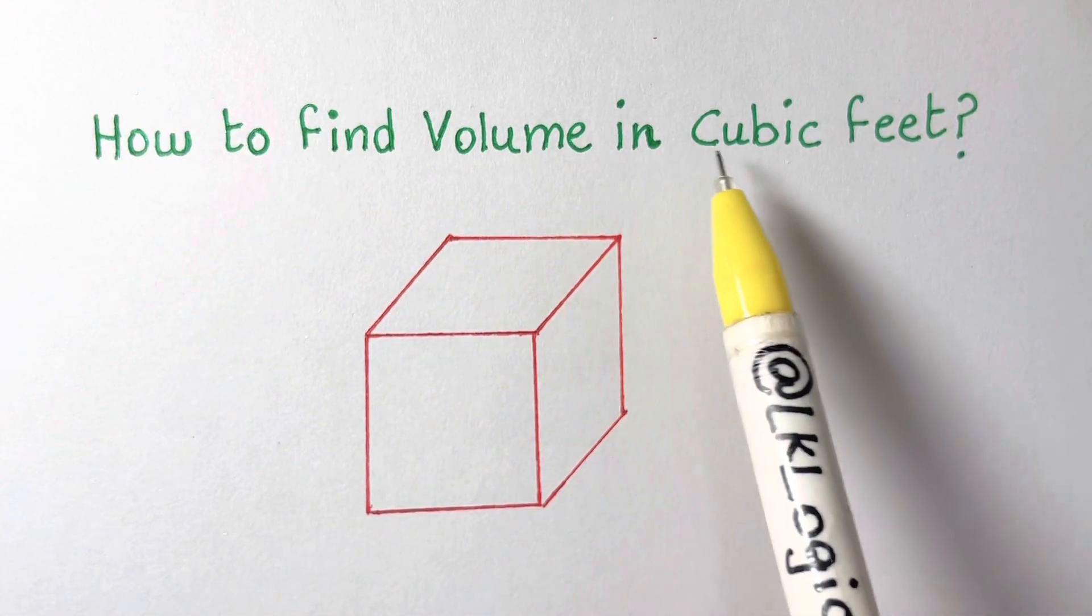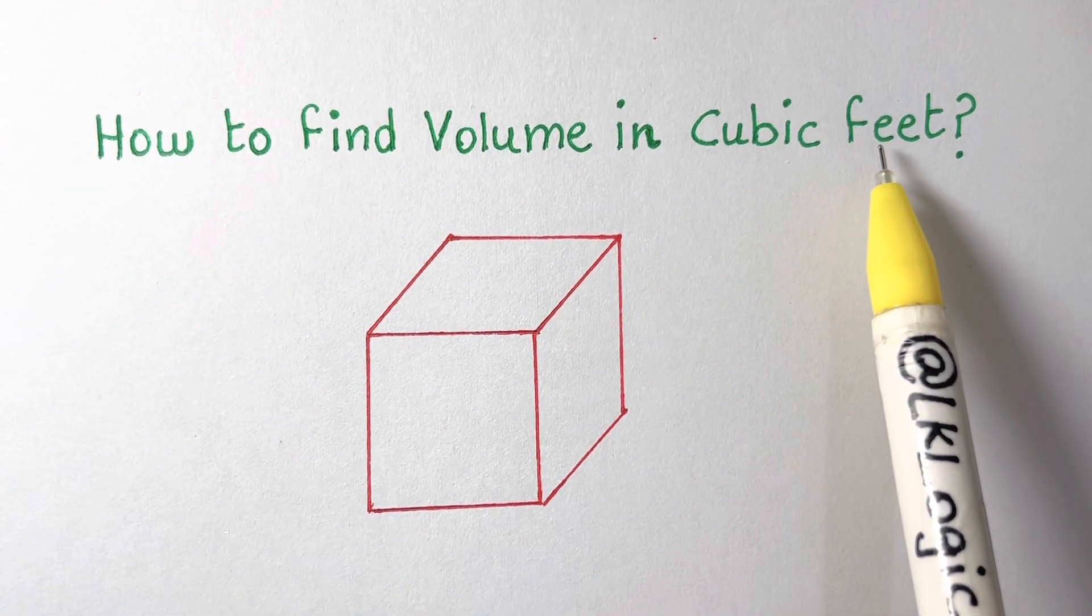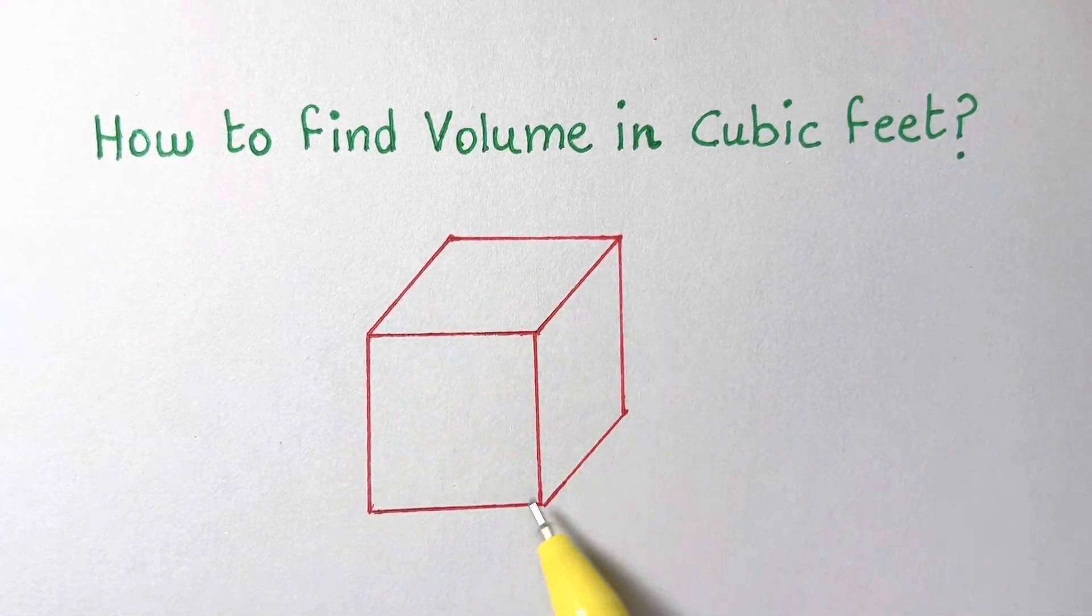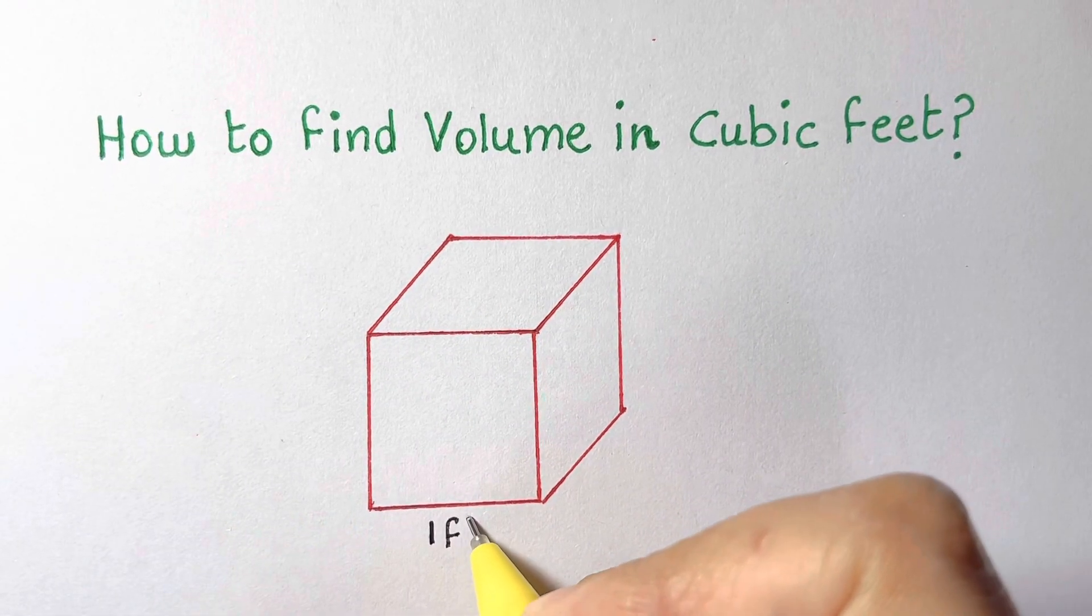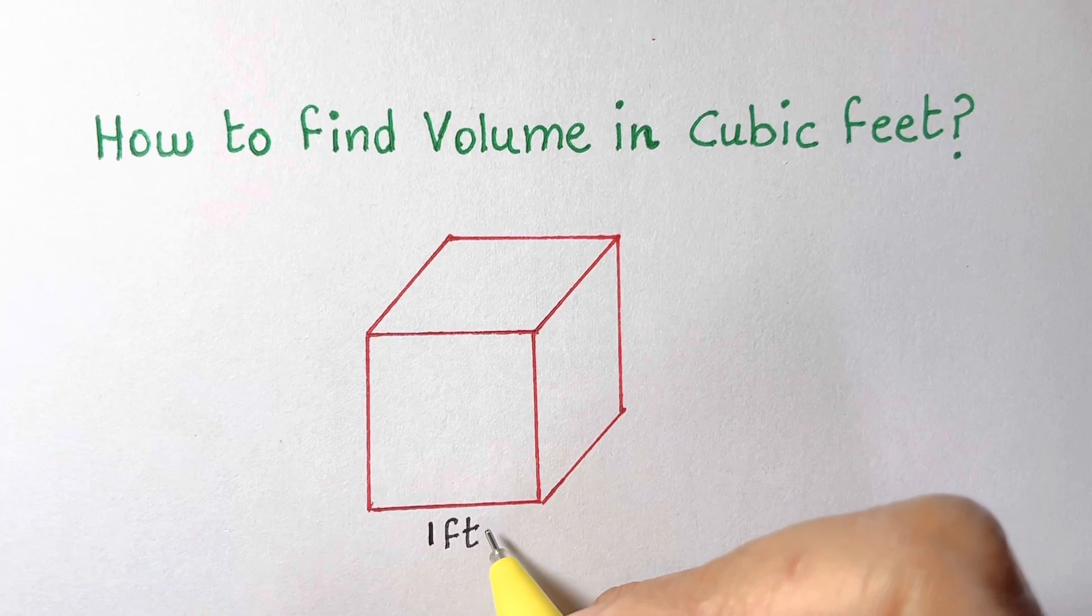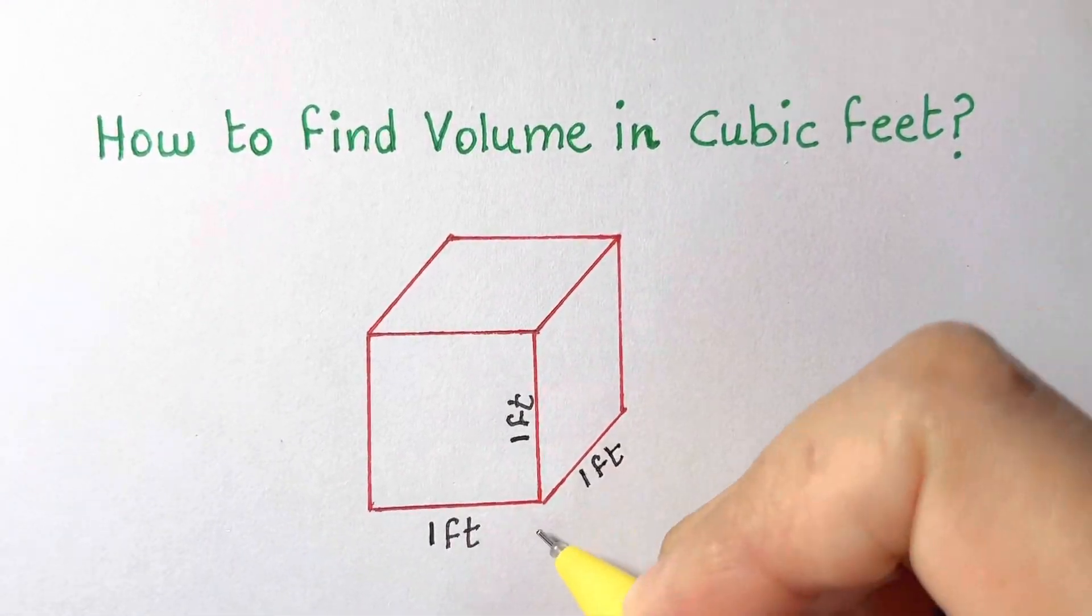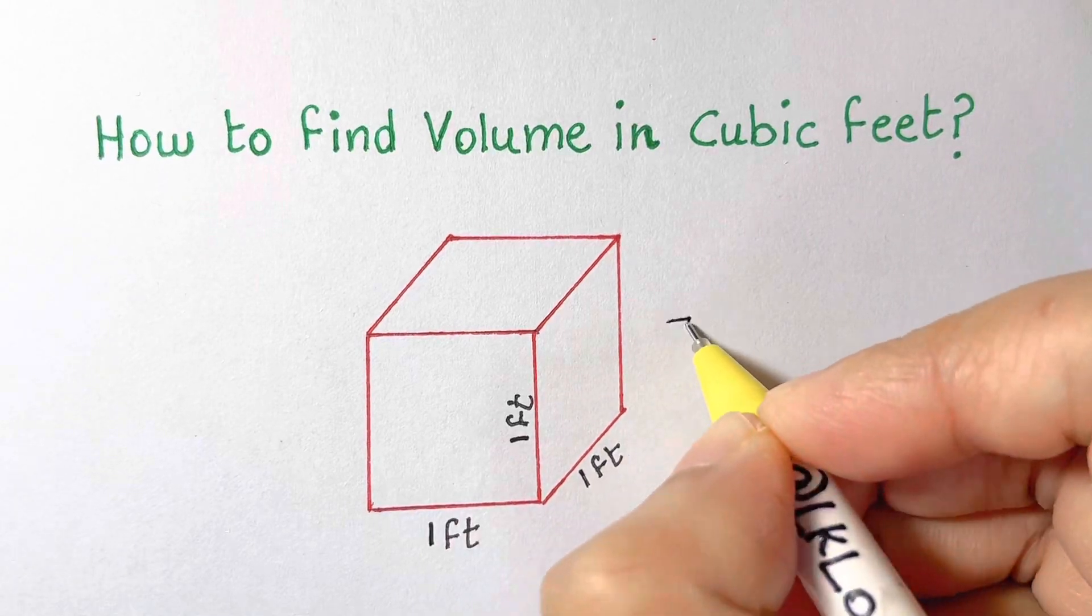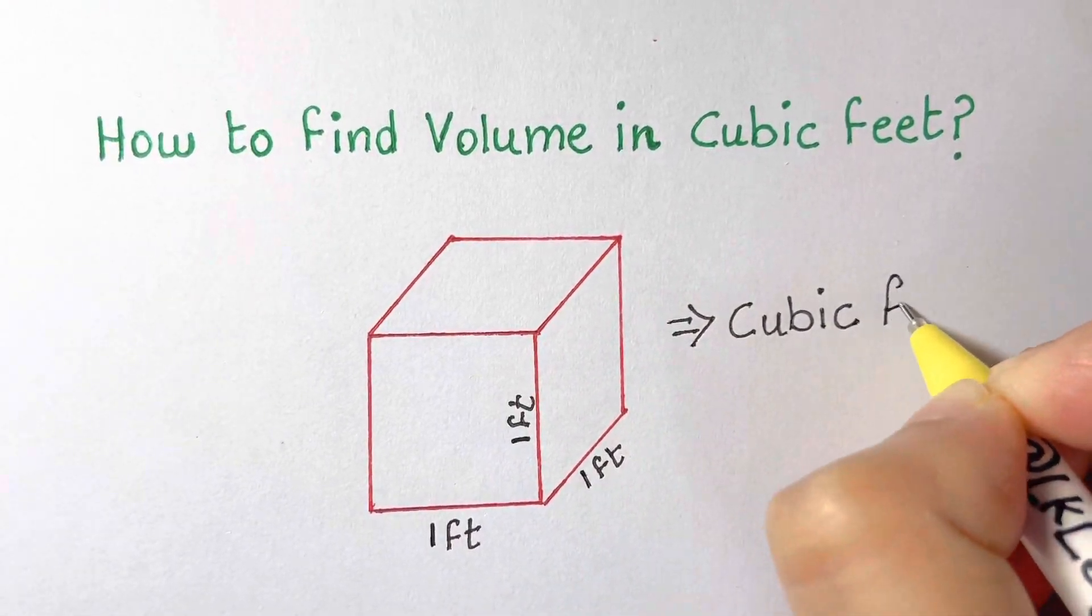This is how to find volume in cubic feet. A cubic foot is a cube whose dimensions are one foot in width, one foot in height, and one foot in depth. If these measurements were in feet, this would represent a cubic foot.